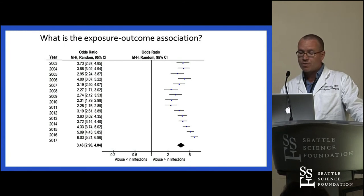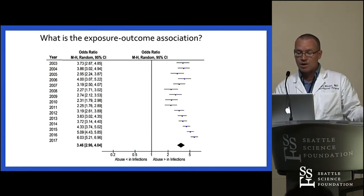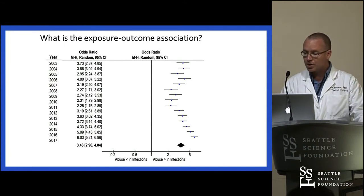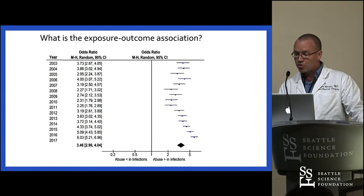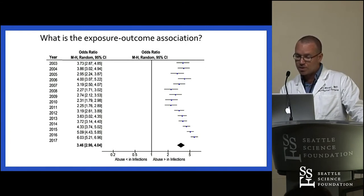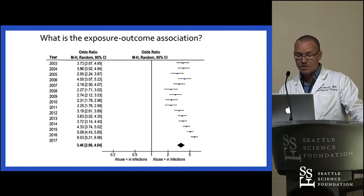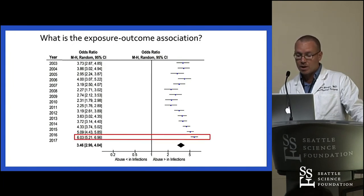Finally, by combining data from the infected and non-infected groups, we could determine how the association between drug abuse and spine infections changed throughout the years. Starting from 2011, abusing drugs becomes more prone to be associated with spine infections. And in 2017, if you're a drug abuser, you're six times more likely to acquire spine infections.